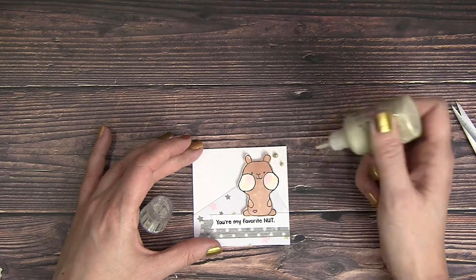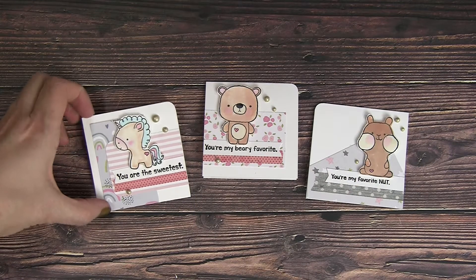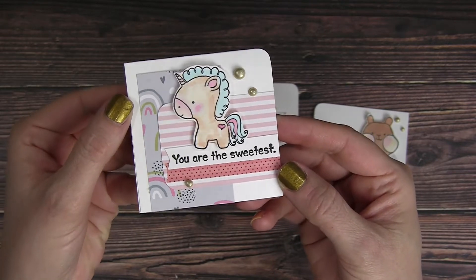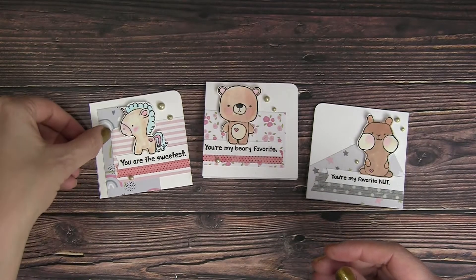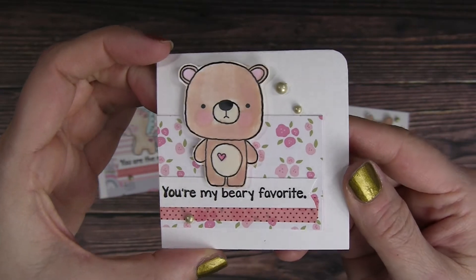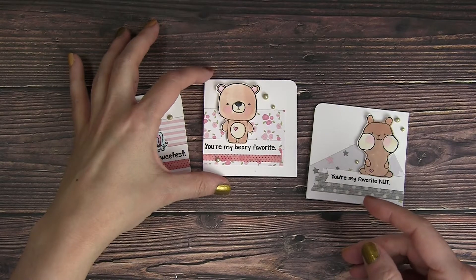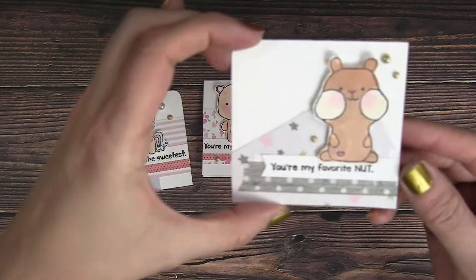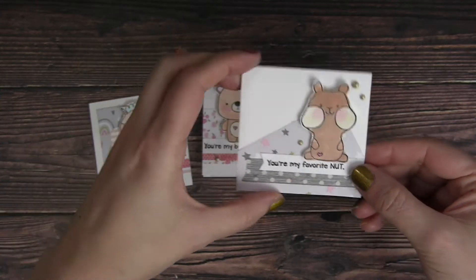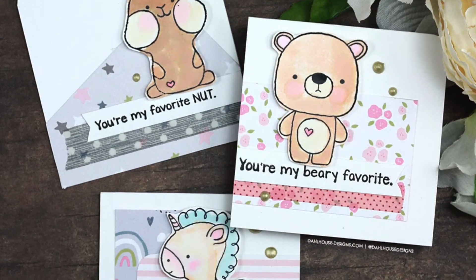So here are our three finished tiny valentines. I just love how cute and sweet they are. The little unicorn with the fun pattern papers and colorful blues and pinks, and then the texture of the watercolor for all of these is fabulous. I love this tiny bear and his sentiment you're my berry favorite, which is super punny and cute. And then last is our fun chipmunk with the sparkle from the nouveau drops and just the fun pattern papers as well.